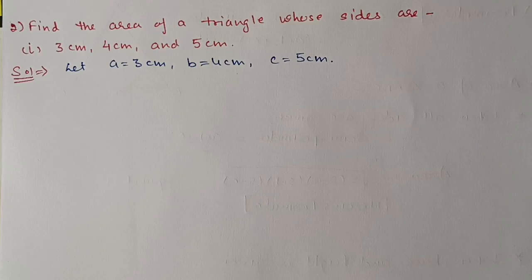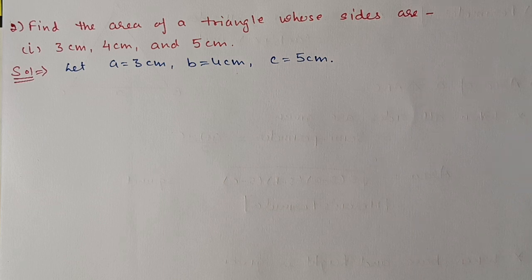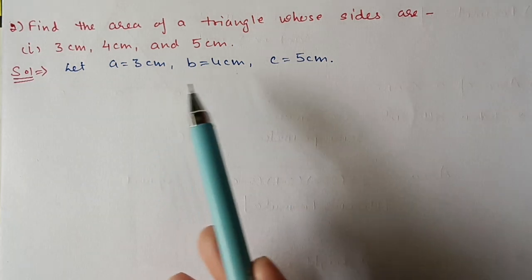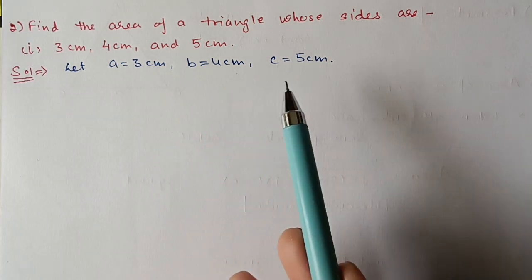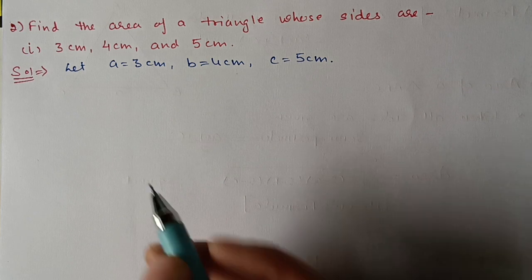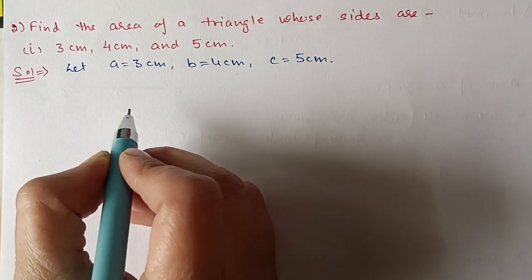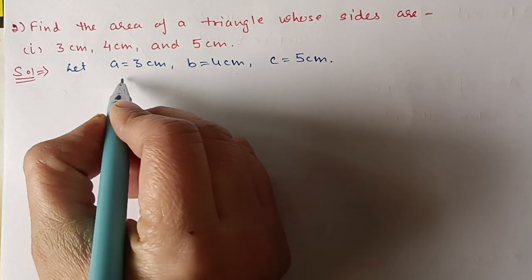Question number two: find the area of a triangle whose sides are 3 cm, 4 cm, and 5 cm. Here all three sides are given, so we will use Heron's formula. Let a = 3, b = 4, and c = 5 cm. Then we will calculate the semi-perimeter s.